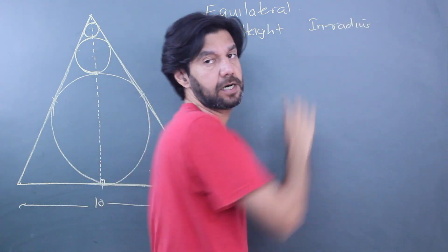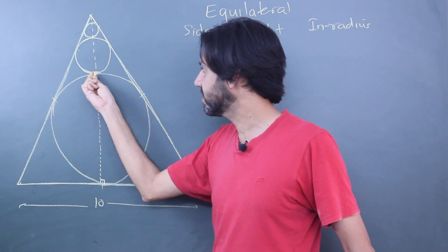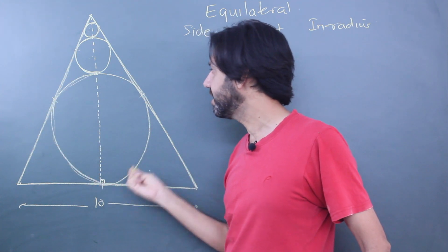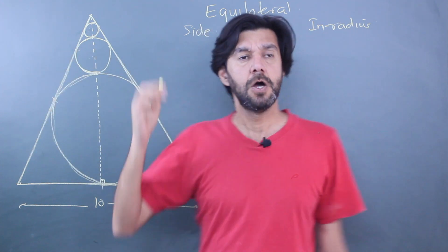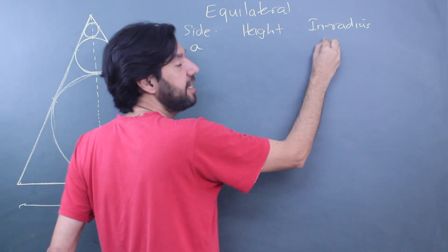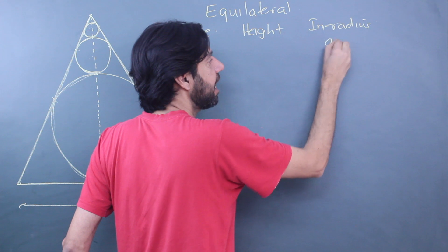If you look at the image carefully, this first circle, the largest circle, is nothing but the inradius of the triangle. So you should directly get: if the side is a, the inradius of the triangle is nothing but a/(2√3).